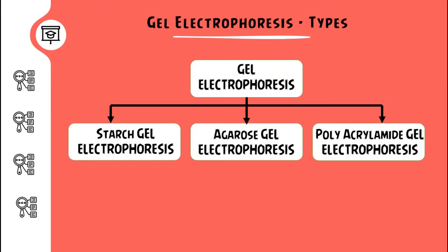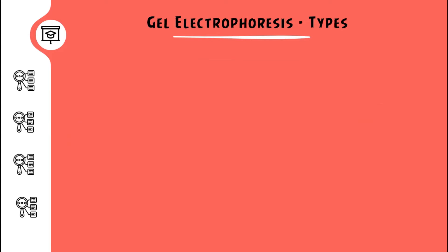Gel electrophoresis could be classified based on the types of gel used: starch gel electrophoresis, agarose gel electrophoresis, or polyacrylamide gel electrophoresis. Starch gel electrophoresis is the basic form, where the gel material is starch along with petroleum jelly mixed in buffer. The gel is formed as a semi-solid gel due to intertwining and branching of amylopectin.